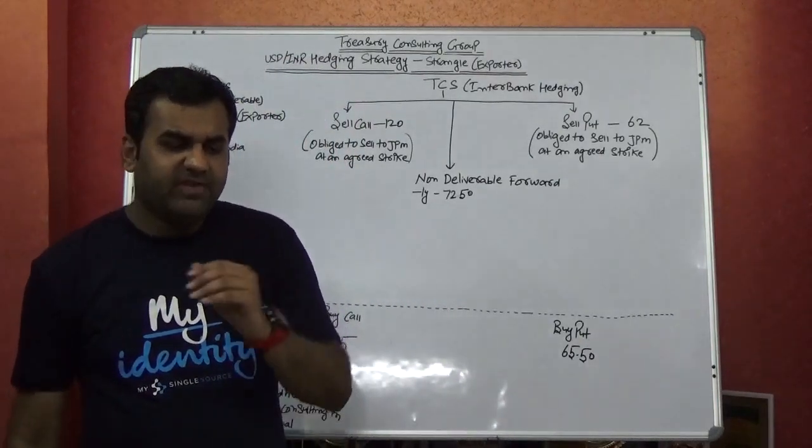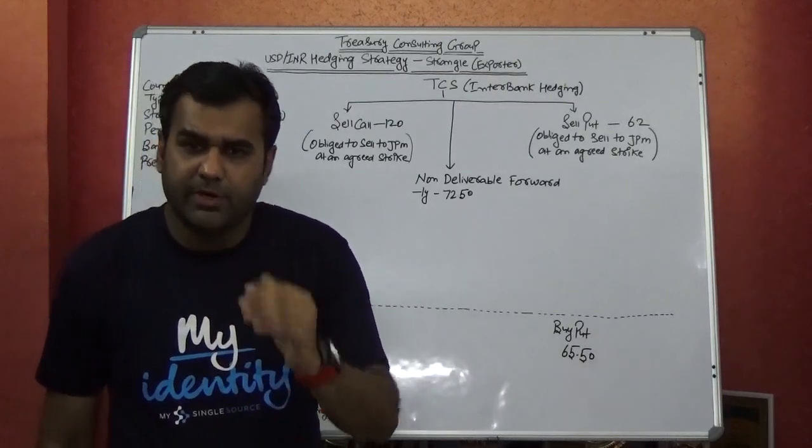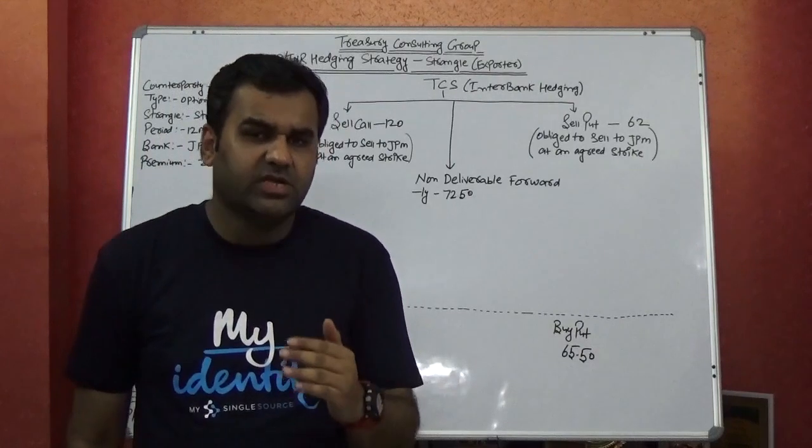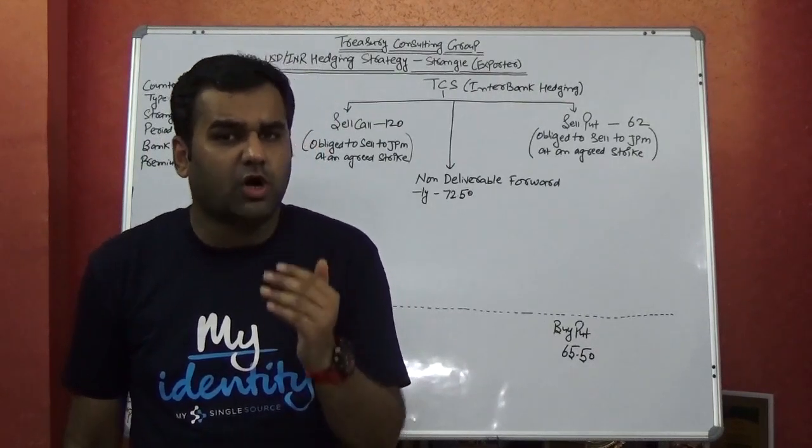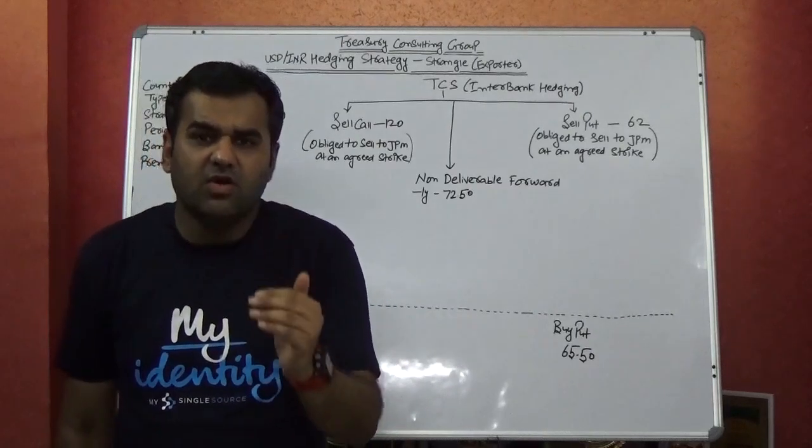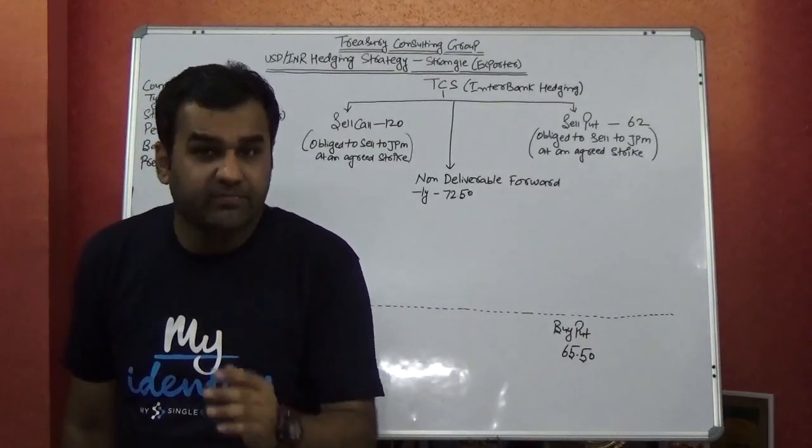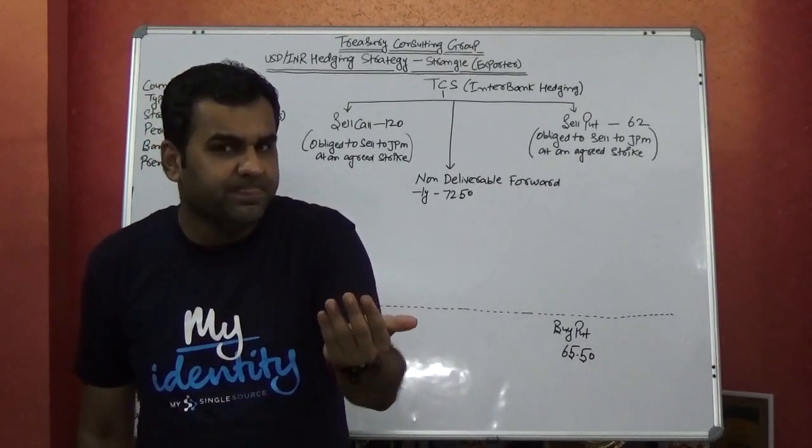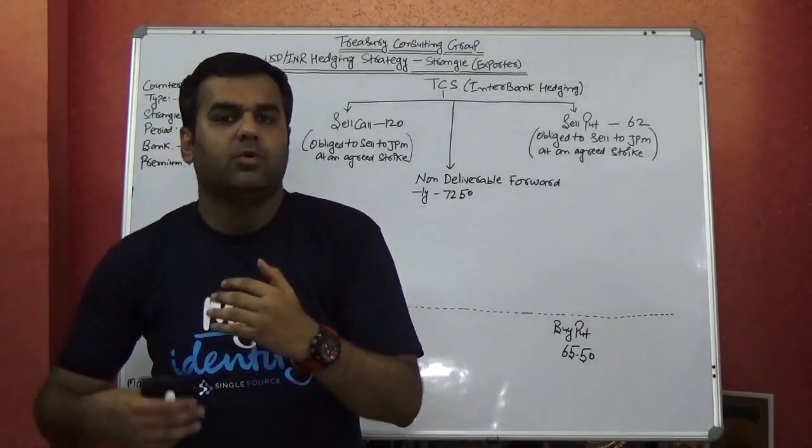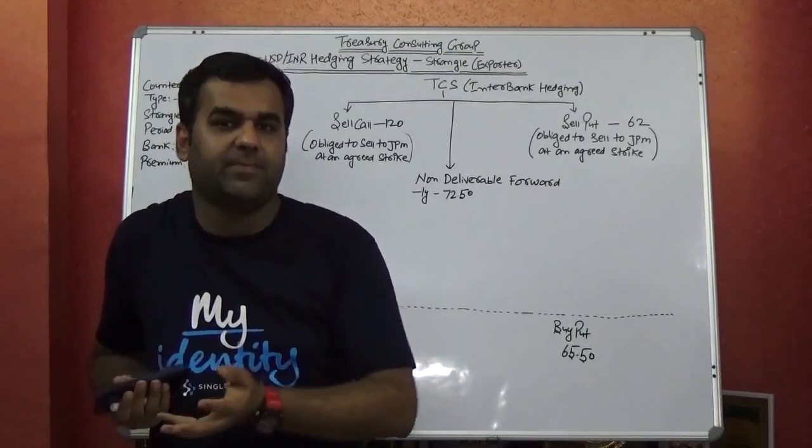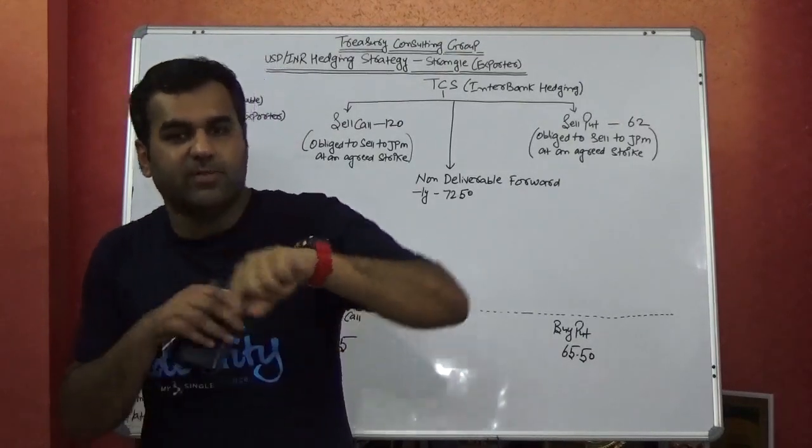Back to the topic. We have taken the pricing from Reuters and Bloomberg. This pricing suggests that sitting today, the price of a zero-cost strangle—which effectively means that TCS India will pay nothing and receive nothing. And the most innovative central bank of the globe, which is Reserve Bank of India, would be very happy.